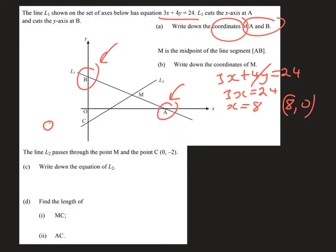Similarly when we're trying to work out the y-intercept, here is our equation 3x plus 4y equals 24. This time on the y-axis, the value of x is 0, so you'll have 4y equals 24, therefore y equals 6. Using coordinates we need to express that as (0, 6). So there are the coordinates for A and B.